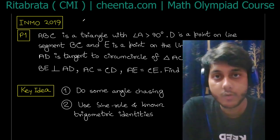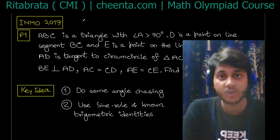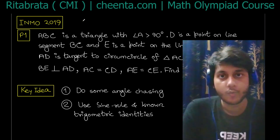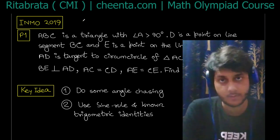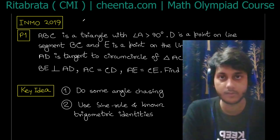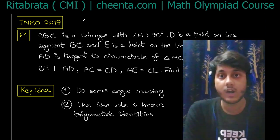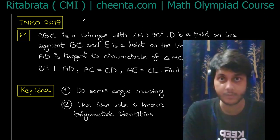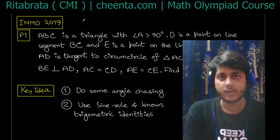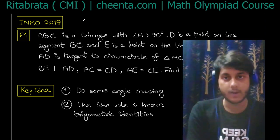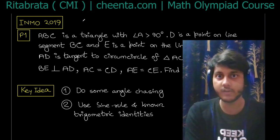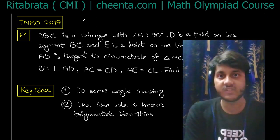Hello, today I want to discuss a geometry problem that appeared in INMO 2019. We'll solve this using trigonometry — the usual sine and cosine rules and trigonometric identities — as there are a lot of hard olympiad geometry problems that can be easily solved using trigonometry, commonly known as 'trig bash'. This is a very important technique and this will give a general idea of how to solve this type of geometry problem using trigonometry.